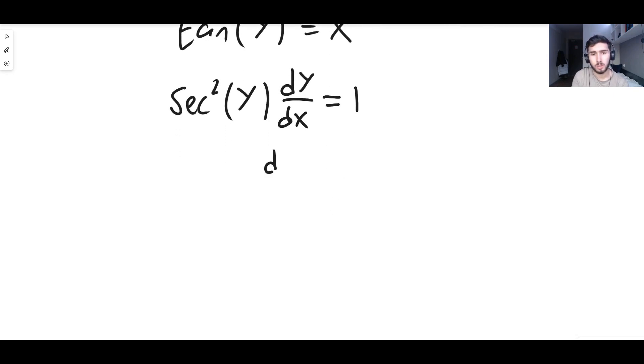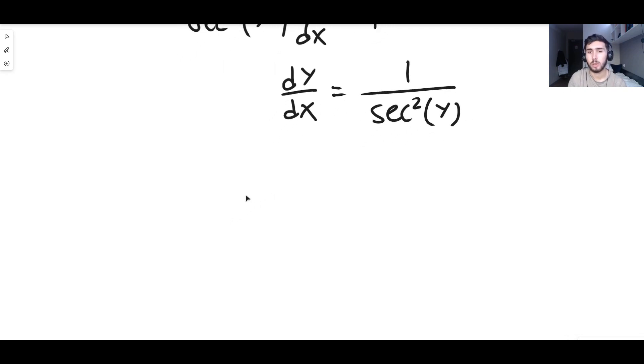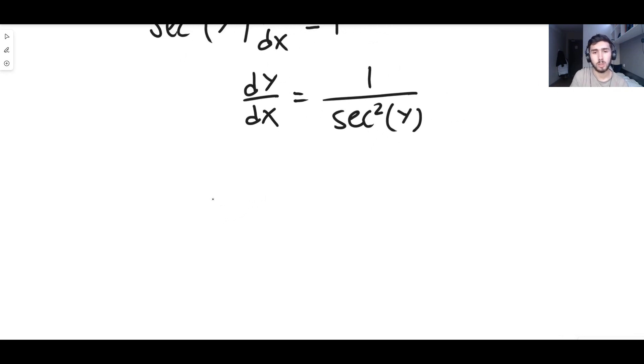Then what we do is we divide both sides by sec²(y), and this gives us one over sec²(y). You might be tempted to say no, no, no, just multiply by cos²(y). True, absolutely, this on the right hand side is cos²(y) - one over one over cos²(y) is cos²(y), 100%. Don't do that though. You might be tempted to, but just leave it like this for the time being.